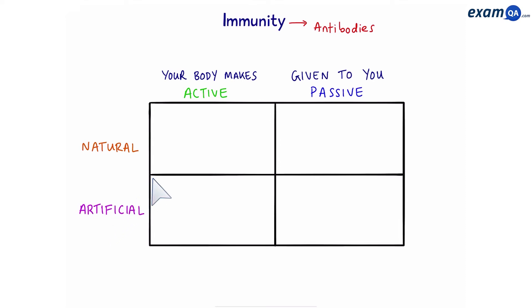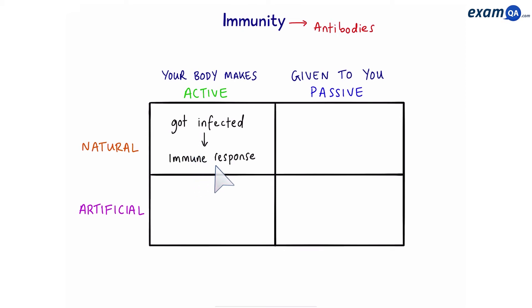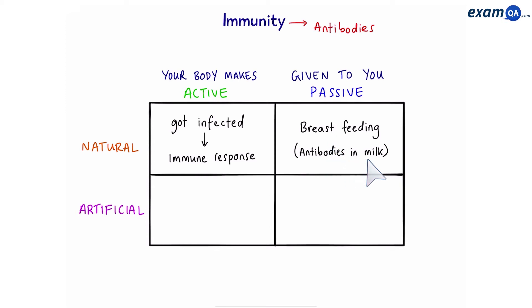Starting with active natural: an example is getting infected. Getting infected by a pathogen is part of the natural life cycle of an organism — when an organism gets infected, this triggers the immune response and produces antibodies. For passive natural, an example is breastfeeding. During breastfeeding, antibodies in the mother's milk are given to the baby. This is passive because the baby's body doesn't produce the antibodies itself — they are given from the mother. Antibodies can also be transferred from mother to baby during pregnancy through the placenta.